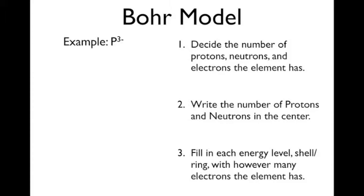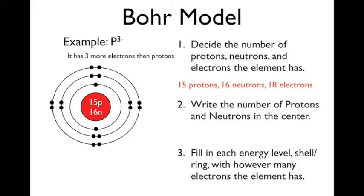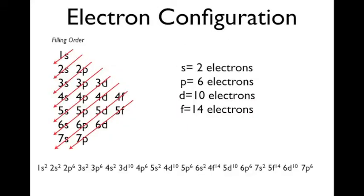Another one, phosphorus 3 negative. That means it's going to have three more electrons than protons. So it's got 15 protons, 16 neutrons, and 18 electrons. Write that in the center, and now we're filling out on the outside 18 electrons total around all the shells.